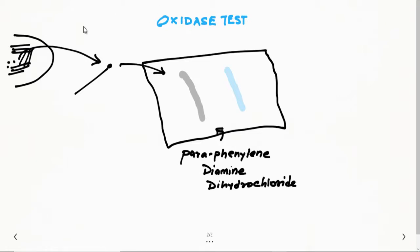In the oxidase test, we take a pure isolated colony with a loop or stick and make a streaking line on filter paper. This filter paper is already impregnated with a dye known as para-phenylene diamine dihydrochloride.